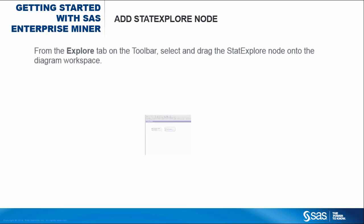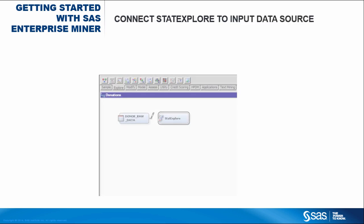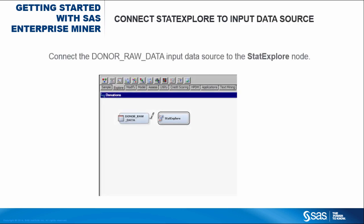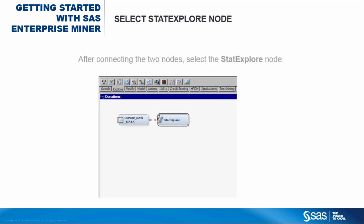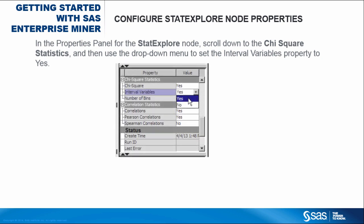To understand our raw donor data, let's use the StatExplore node to generate some descriptive statistics. From the Explore tab on the toolbar, select and drag the StatExplore node onto the diagram workspace. Connect the donor raw data input data source to the StatExplore node. After connecting the two nodes, select the StatExplore node. In the Properties panel, scroll down to the Chi-Square statistics and use the drop-down menu to set the Interval Variables property to Yes.